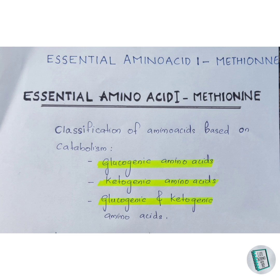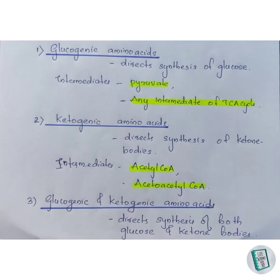First, let us look at glucogenic amino acids. The catabolism of these amino acids leads to intermediates which direct the synthesis of glucose. Those amino acids which yield pyruvate or any of the intermediates of the TCA cycle during their catabolism are termed as glucogenic amino acids.